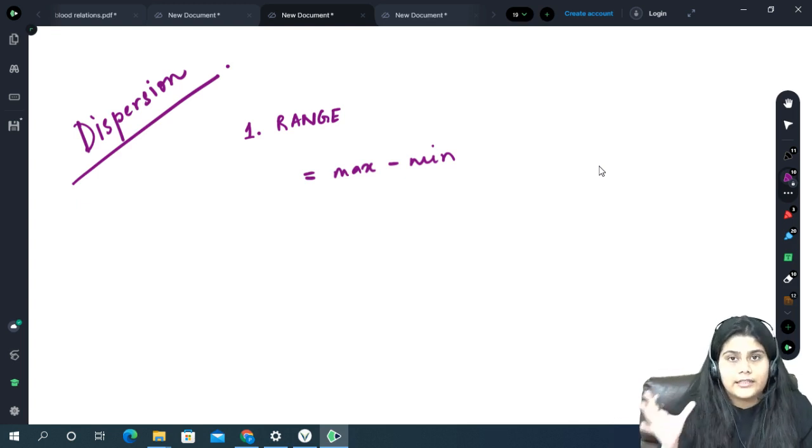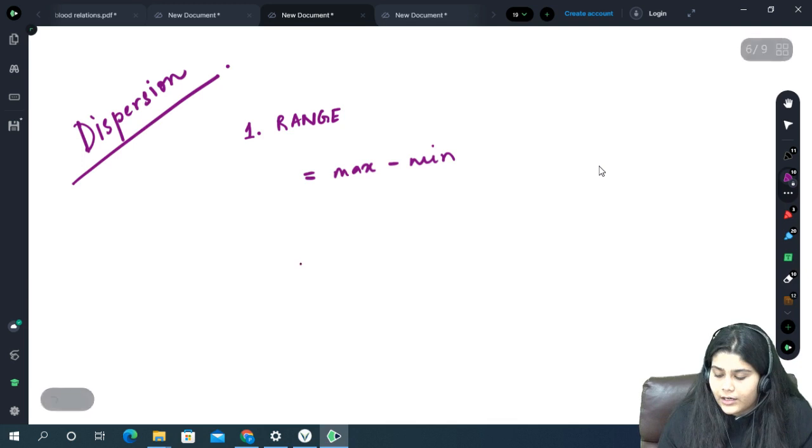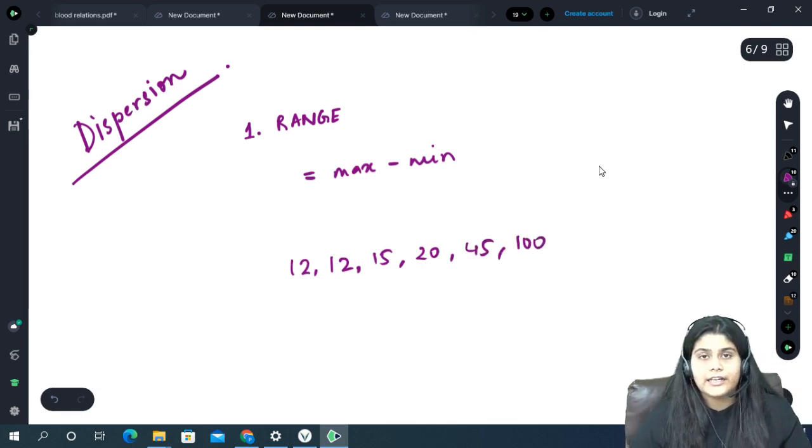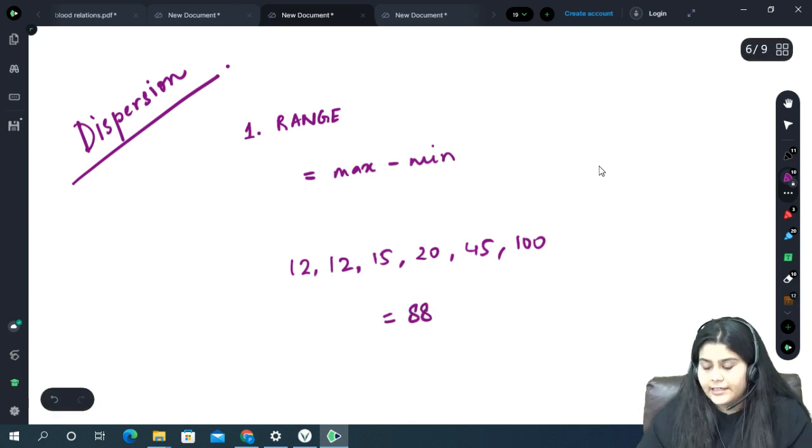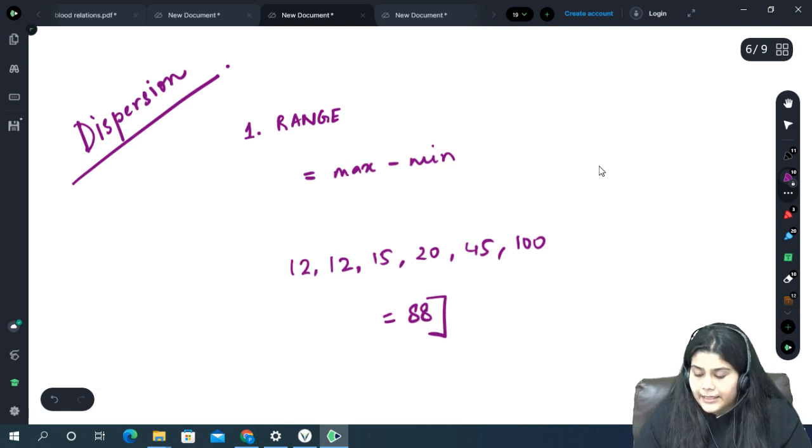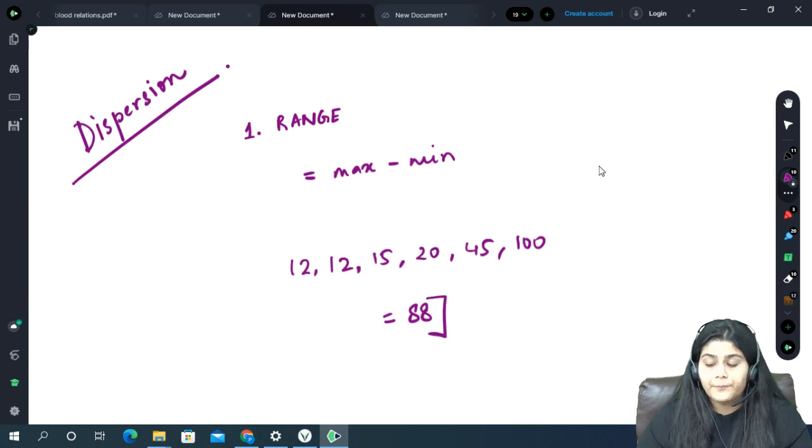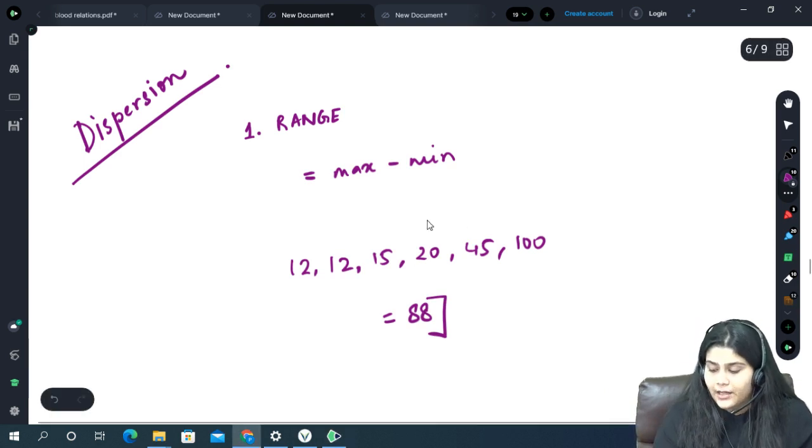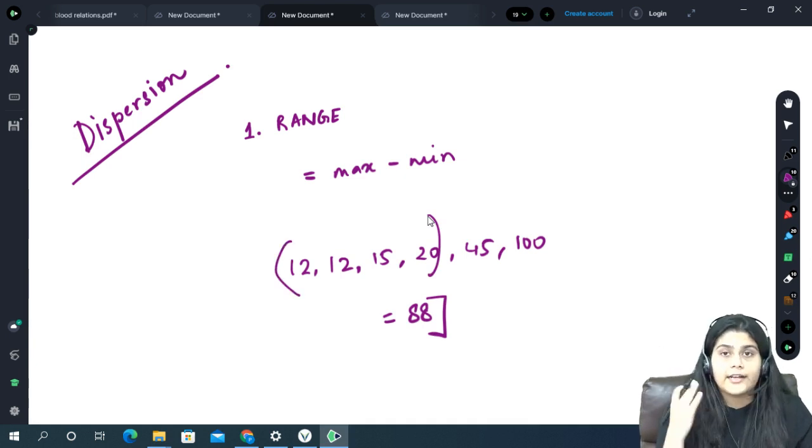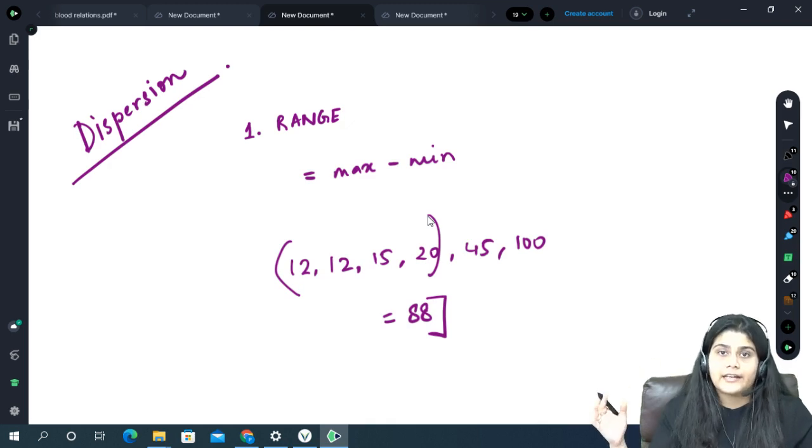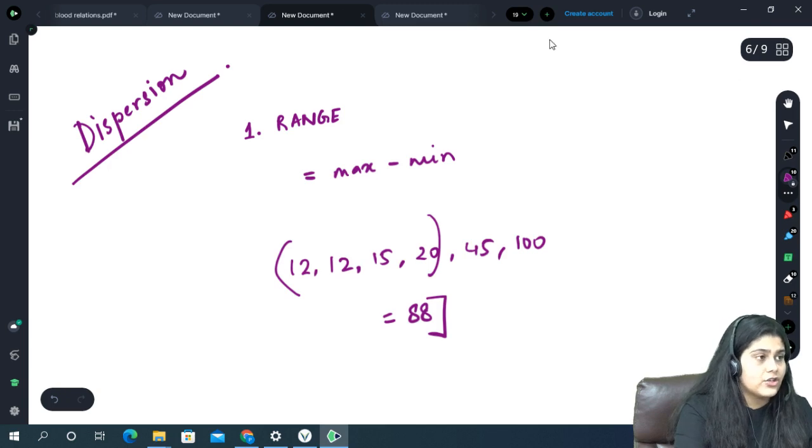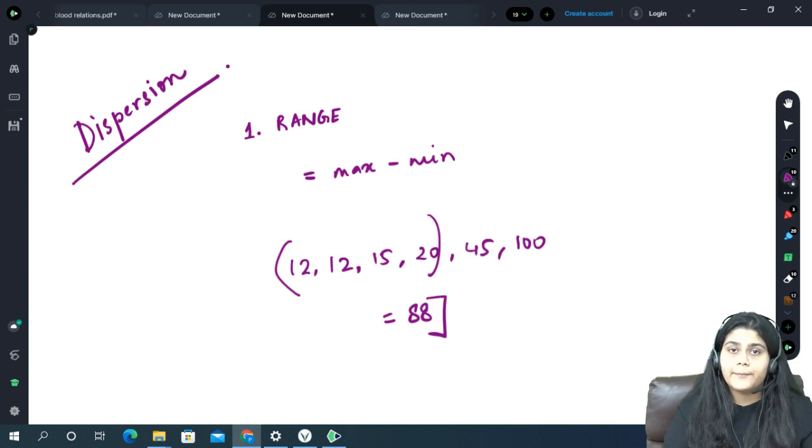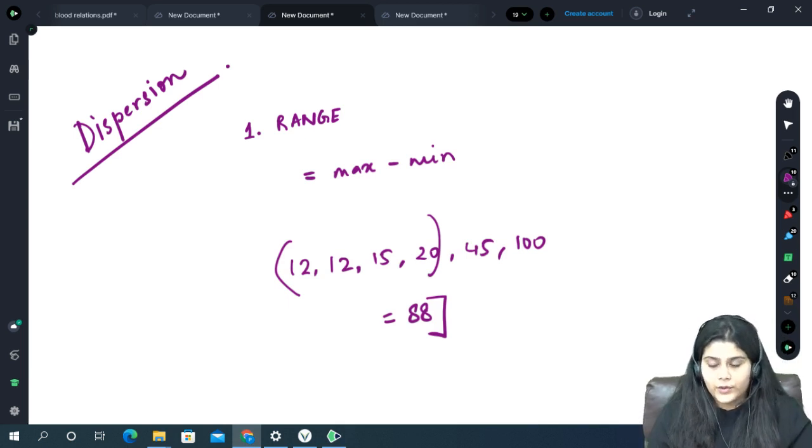Range में it does not consider again that how many values are in between. For example, 12, 12, 15, 20, 45, 100 - so the range is? Range will be 100 minus 12, so range is 88. Now this range says that the data is spread across 88 values. But in this 88, more than half the values are concentrated on the lower half while just two values are even above the second half. That's why this is a disadvantage of range - even though it gives us an approximate idea of how dispersed data is, it does not give a very accurate picture of the actual thing.